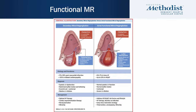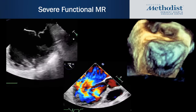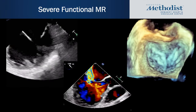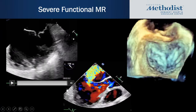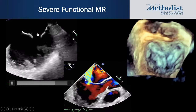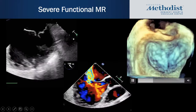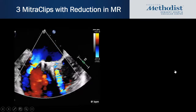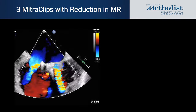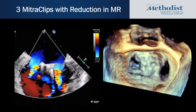For atrial MR, it's important to address secondary causes of atrial dilation before considering surgery or mitral clip. Current studies are evaluating the best management strategy. An example of severe functional MR secondary to LV dysfunction shows severe mitral annular dilation with tenting and tethering of the leaflets and a central coaptation gap. This patient was optimized medically, continued to have severe MR, and underwent transcatheter edge-to-edge repair with three mitral clips and significant reduction in MR.